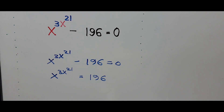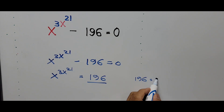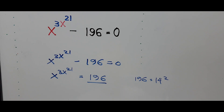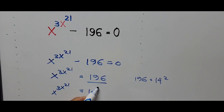Now let's focus on the constant on the right side of the equation. 196 could be written the same way as 14 squared. And substituting that value, it is now x raised to 3x raised to 21 power equals 14 squared.